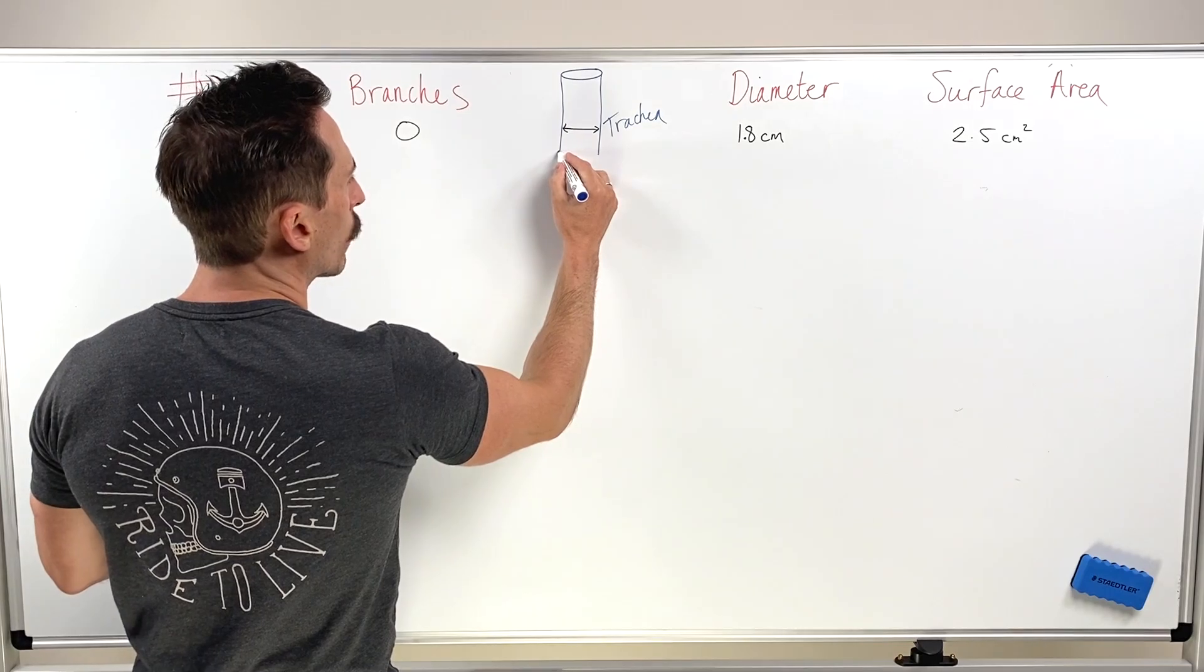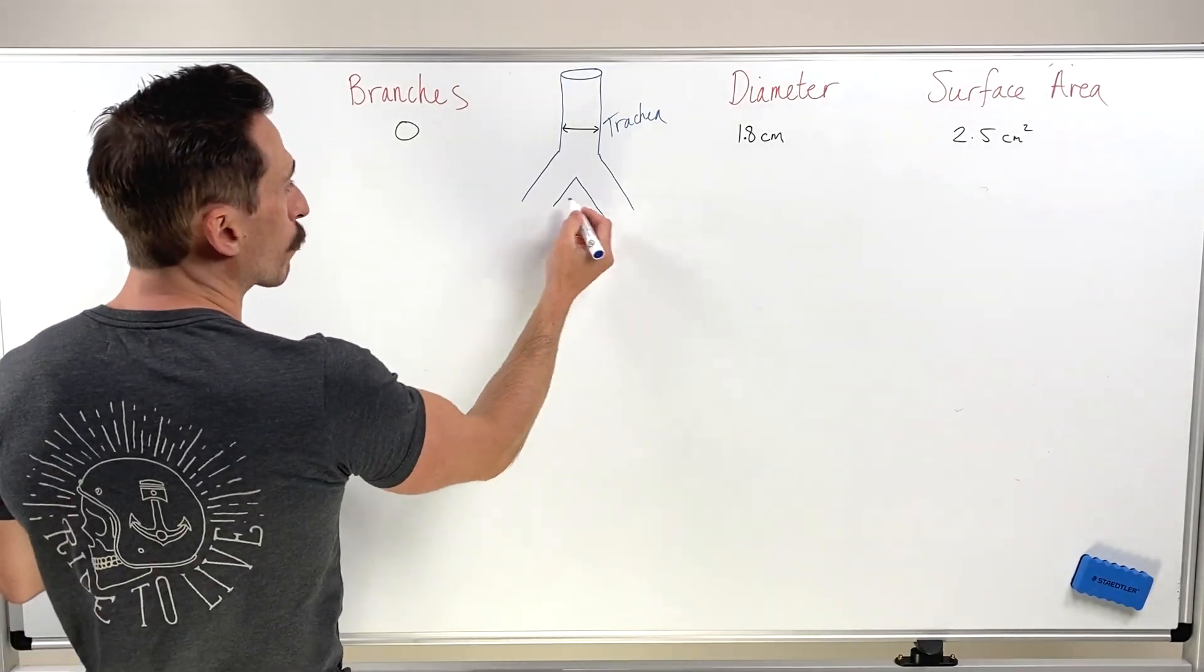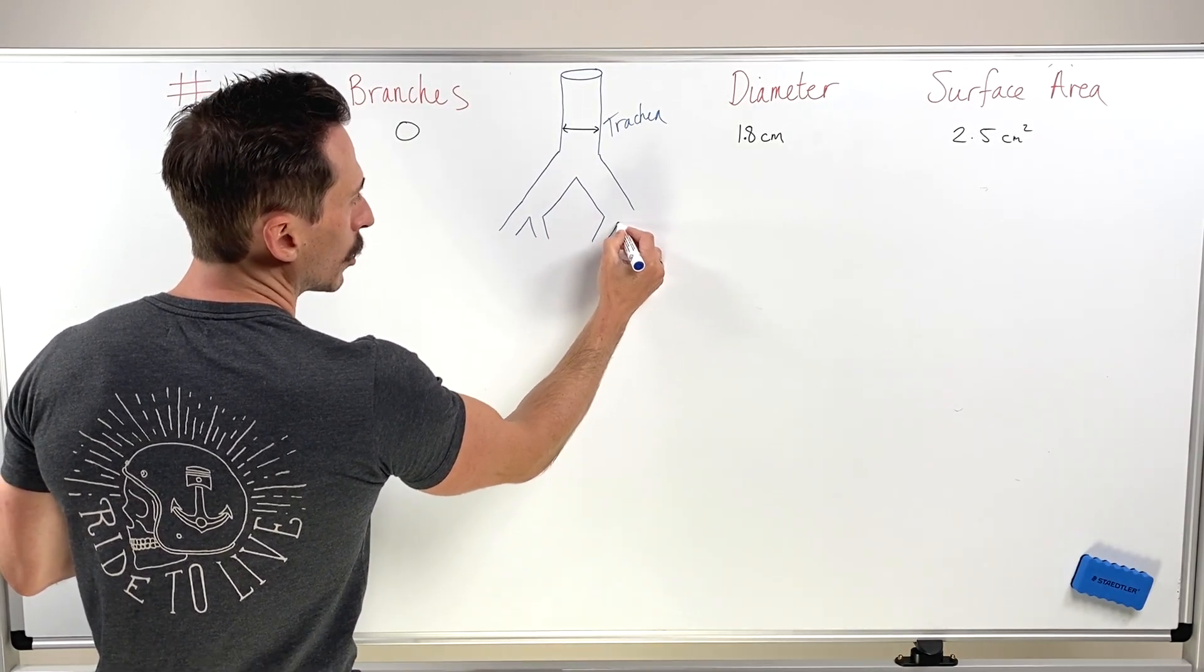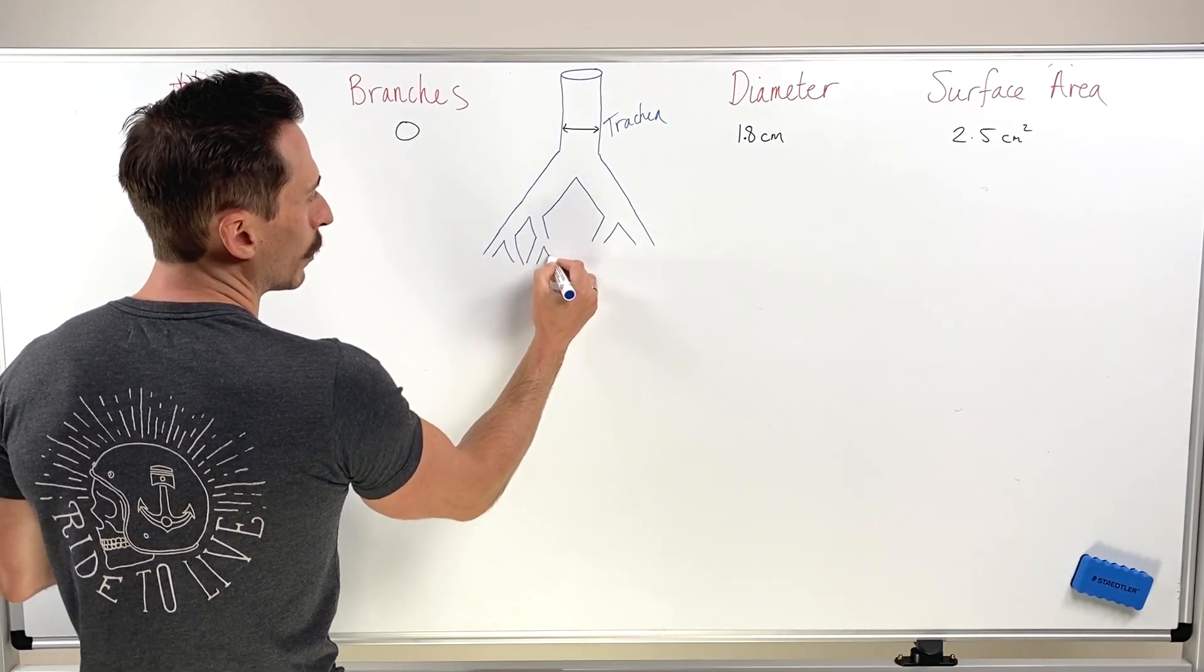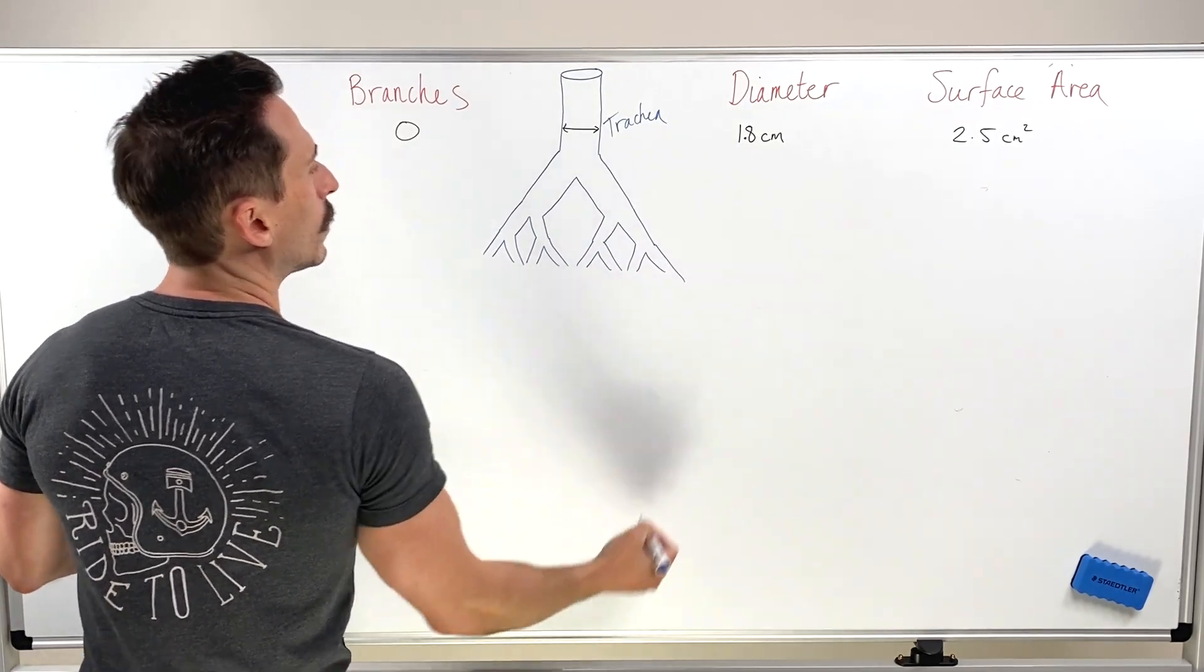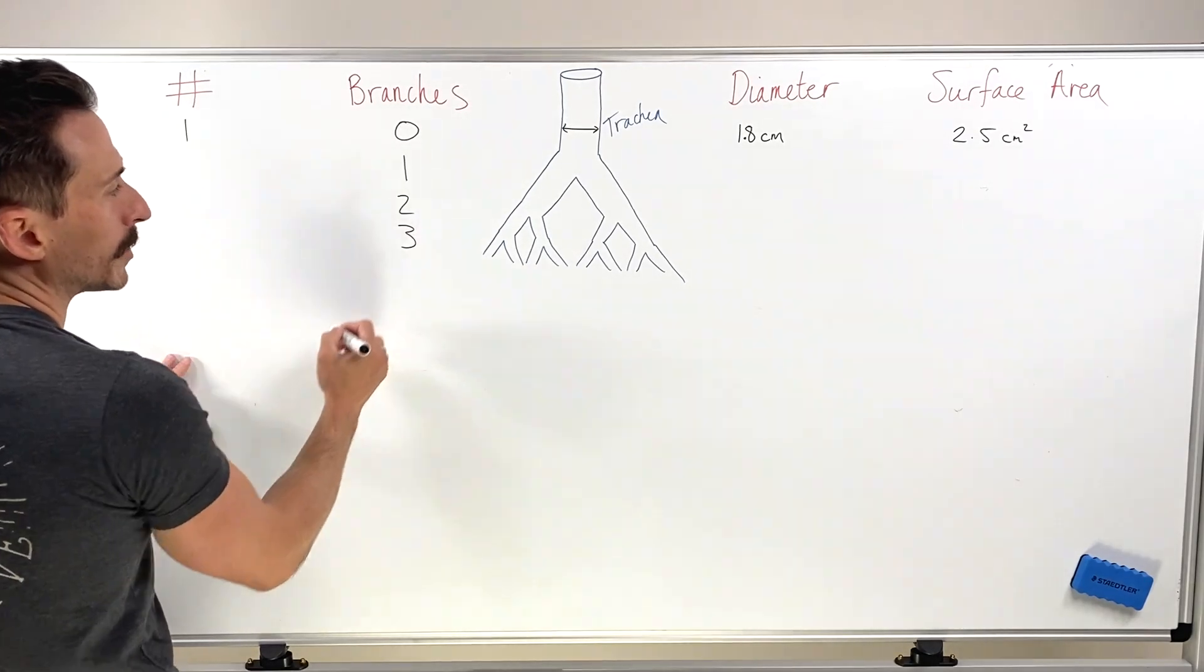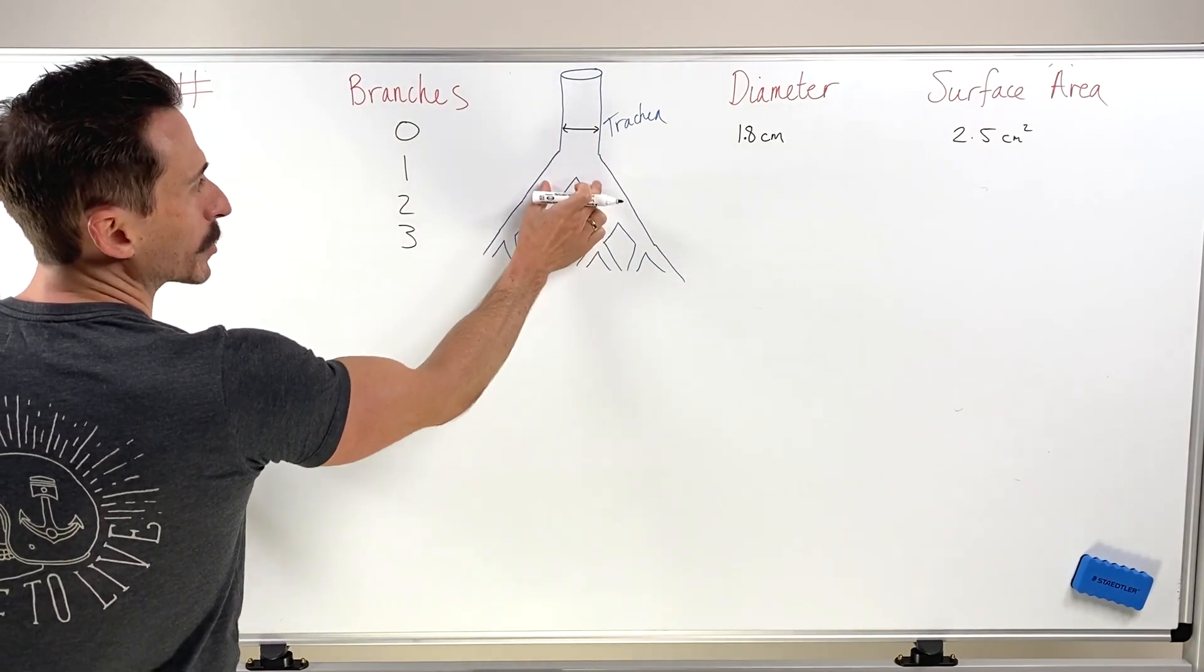The next phase is going to be that of the bronchi. Now we know that we've got the right and left main stem bronchi. But in actual fact, the bronchi will split once, it splits twice, it splits three times. Now what can you see here? The branches splits once, splits twice, splits three times. And each time, one branch, one time it splits, creates two branches.